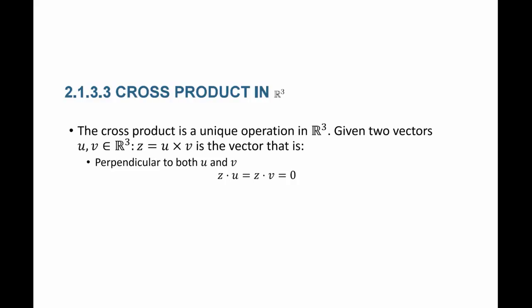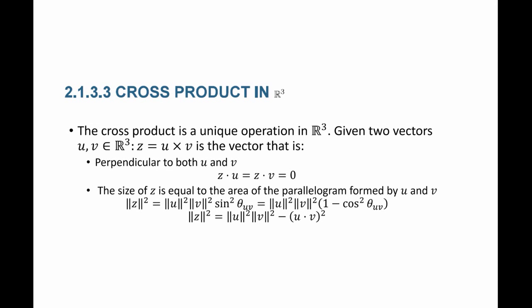The last operation that we're going to define for Euclidean vector spaces is the cross product. The cross product is unique to only R3. Given two vectors, the cross product gives me another vector z, where z equals u cross v. This z is perpendicular to both u and v. The size of this new vector is limited by the area of the parallelogram formed by u and v, with angle theta between u and v.